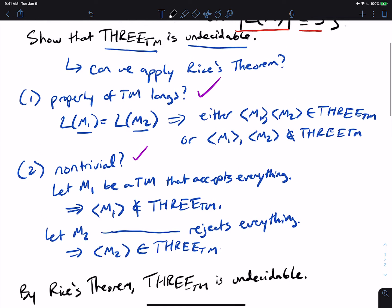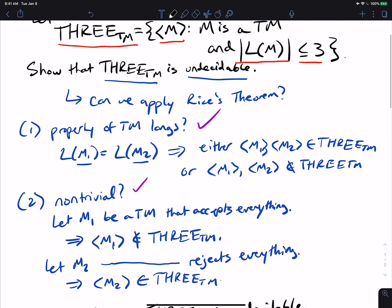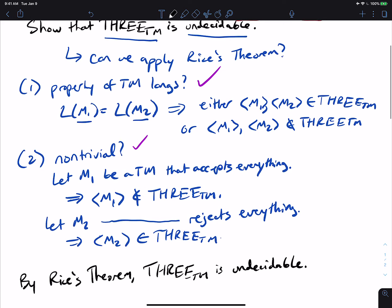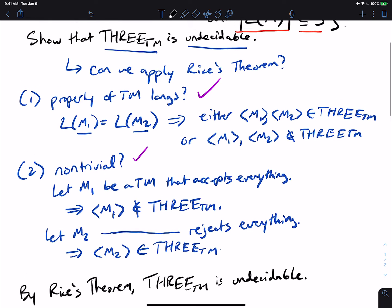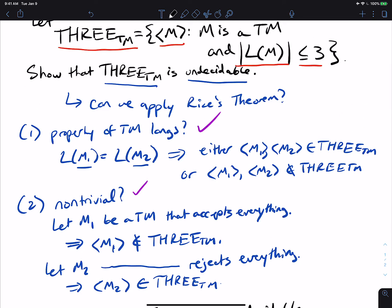So whenever you're faced with a question like this, always check, is it a property of Turing machine languages and is it non-trivial? If both of them are true, then apply Rice's theorem. It's way easier. If it fails one of the two, then you'll have to use a different technique. But if it is both of them, then apply it.